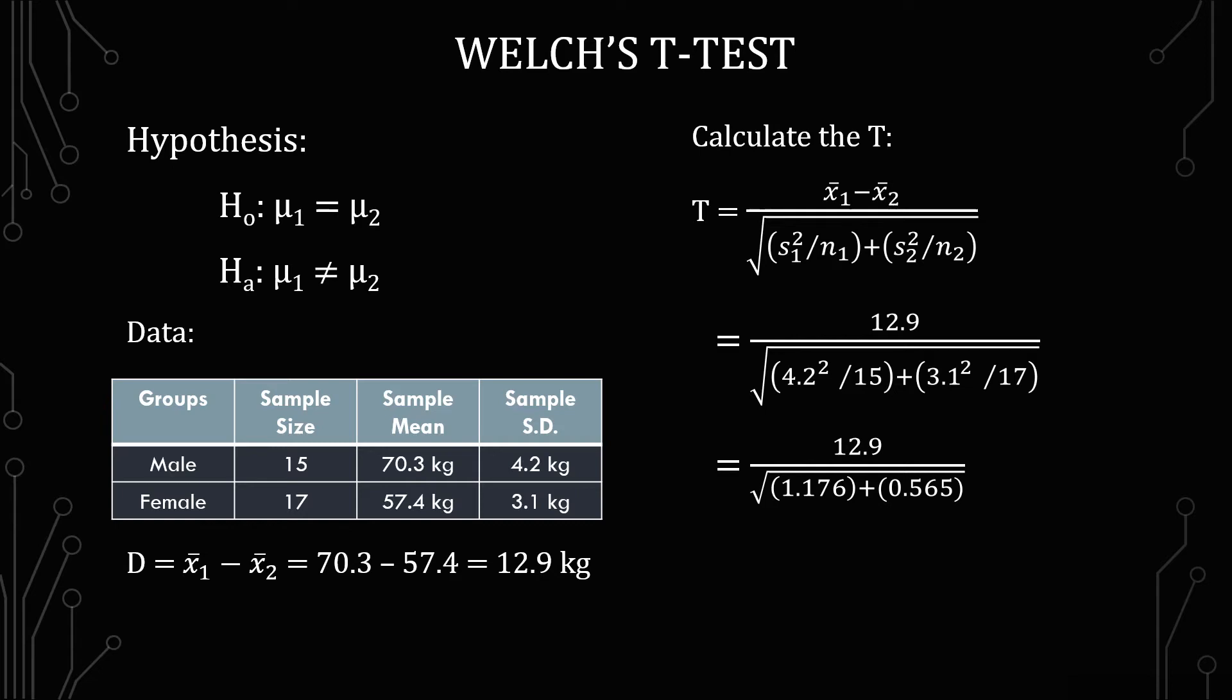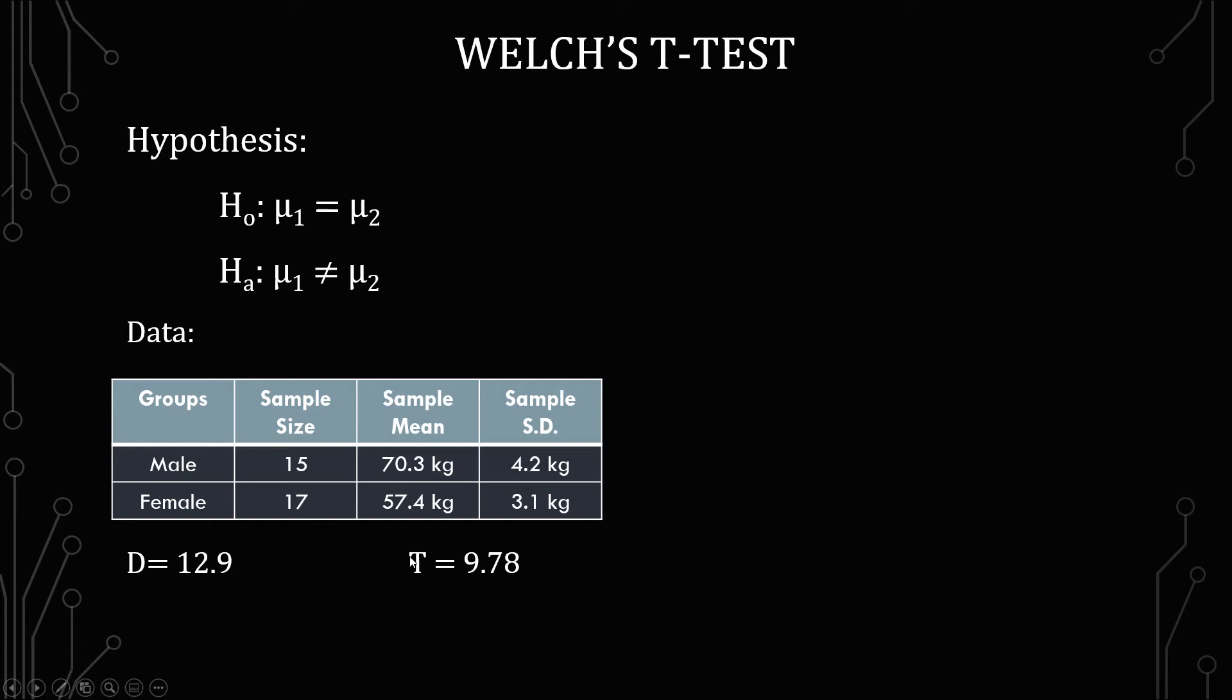The 1.176 is associated with the first standard error calculation and the 0.565 is associated with the second standard error. And this yields a t-value of 9.78. So I have this information here just so you have it as we're going through the next step.